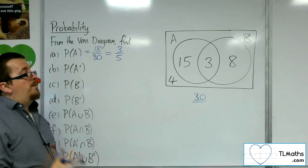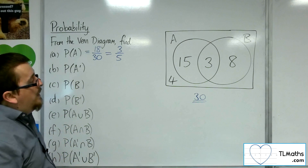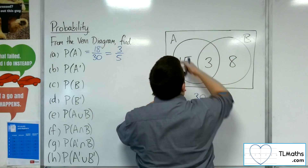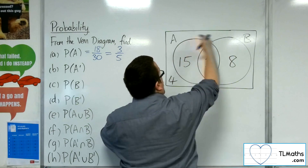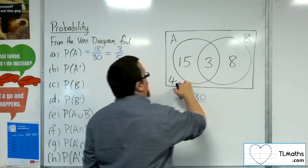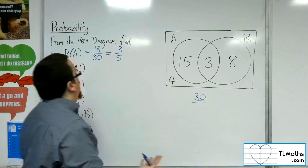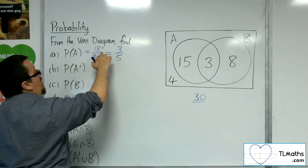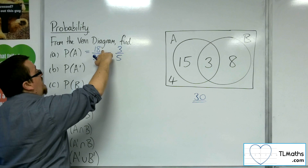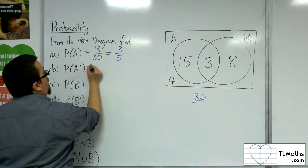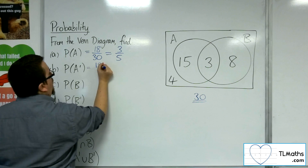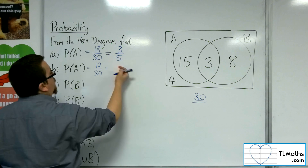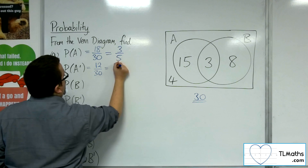Now not A — the probability of not A — is anything that is outside of that circle. So that would be the 8 and the 4, so 12. It makes sense because it should always be 1 take away 18 over 30, giving us 12 over 30, which is 1 take away 3 fifths, so 2 fifths.